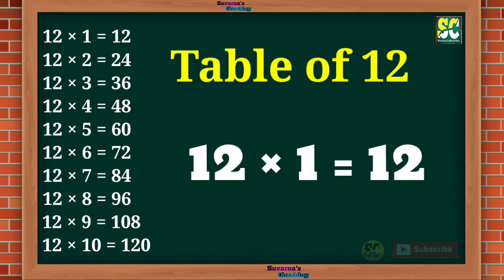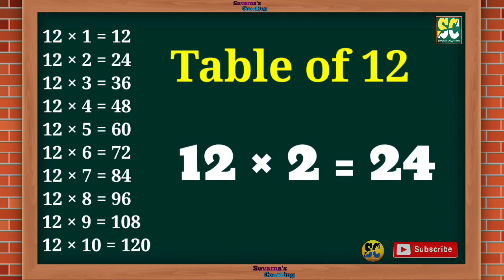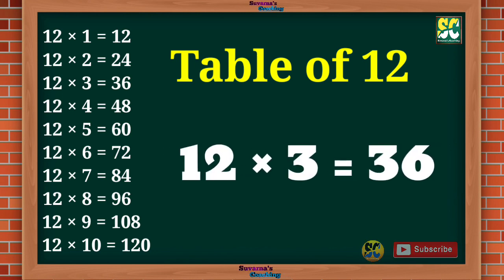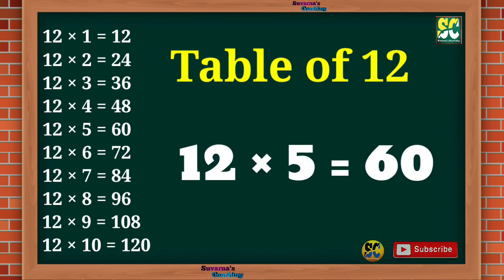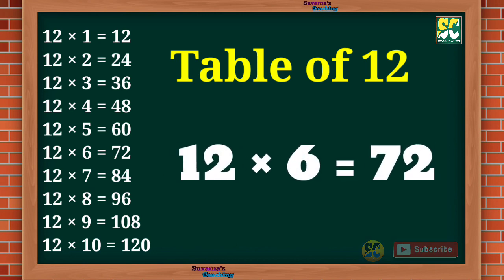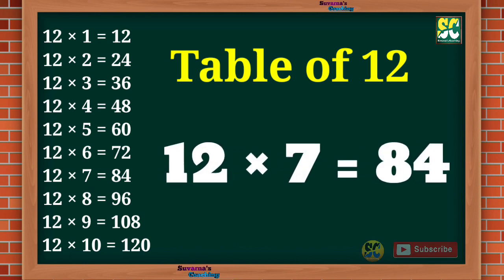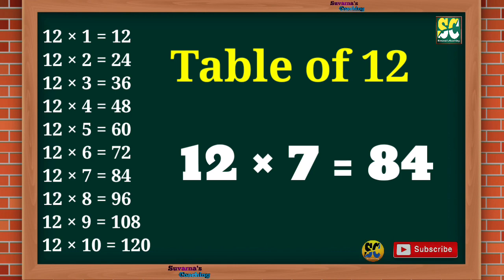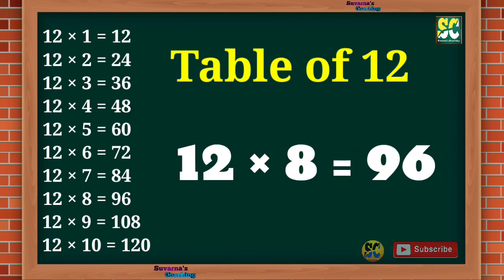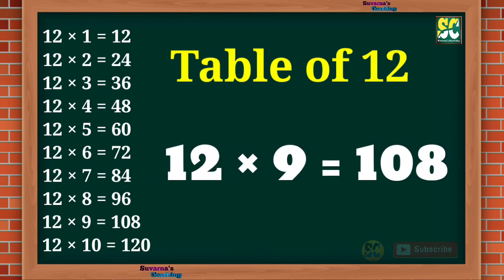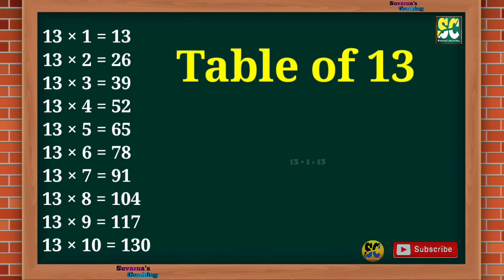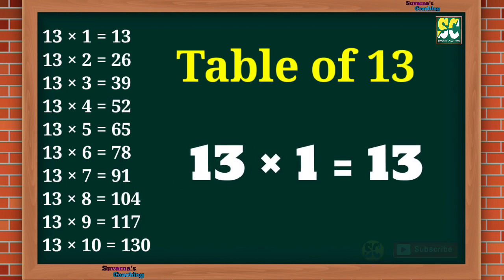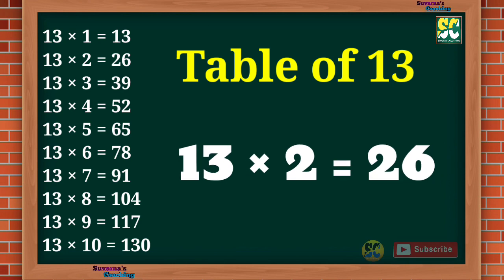Table of 12. 12 1s are 12, 12 2s are 24, 12 3s are 36, 12 4s are 48, 12 5s are 60, 12 6s are 72, 12 7s are 84, 12 8s are 96, 12 9s are 108, 12 10s are 120.